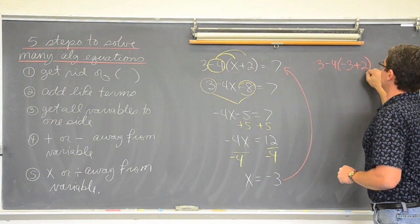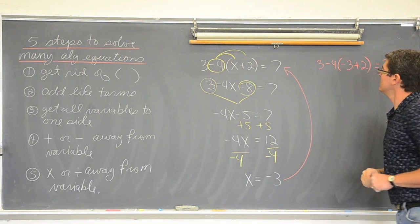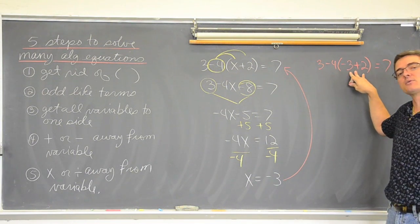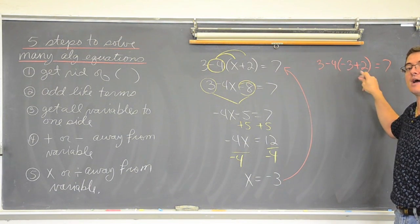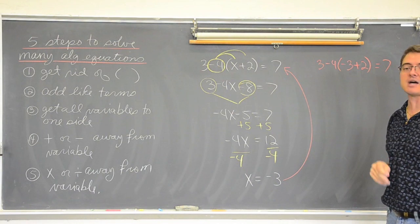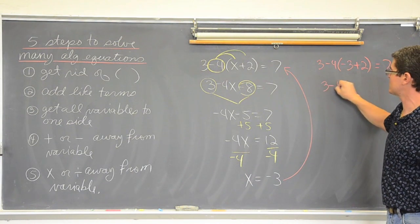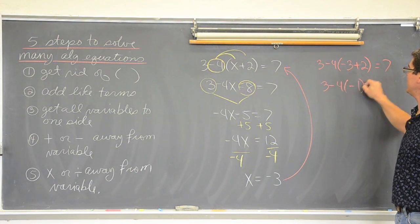3 minus 4 times x we just found was negative 3. Negative 3 plus 2. Parenthesis equals 7. Parenthesis. You have to work with those first inside the parenthesis. Negative 3 and positive 2. Signs are different so subtract those numbers and keep the sign of the larger number. That is going to be 3 minus 4 times negative 1 equals 7.